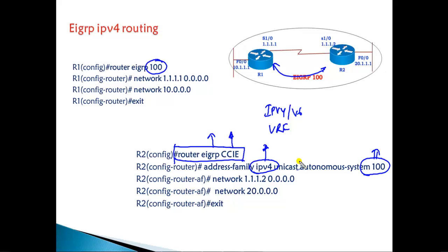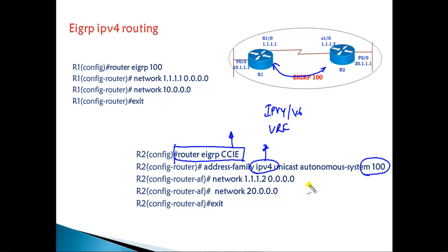On the same router, we can also configure address family IPv4 with autonomous system 200, and multiple autonomous systems can be configured under the same instance. This is a key advantage of name mode — multiple AS configurations coexist under a single named instance.